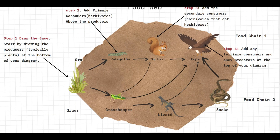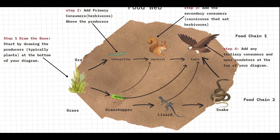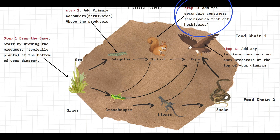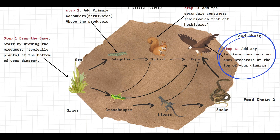Here are the steps to construct a food web. Step one: draw the producers, typically plants, at the bottom of your diagram. Step two: add primary consumers, which are herbivores, above the producers. Step three: add secondary consumers, which are carnivores that eat herbivores. Step four: add any tertiary consumers and apex predators at the top of your diagram, and you have your food web.